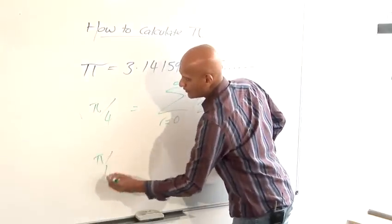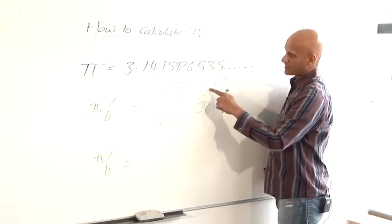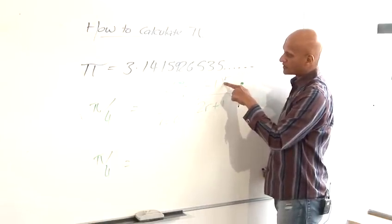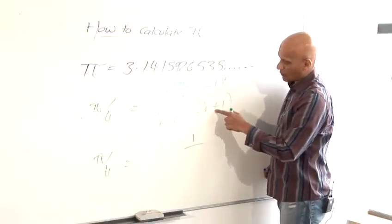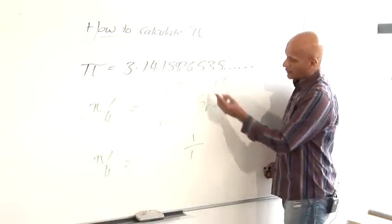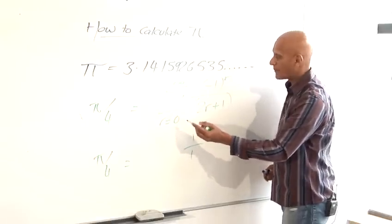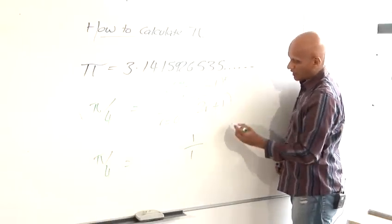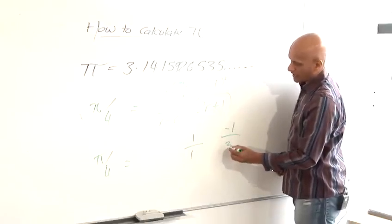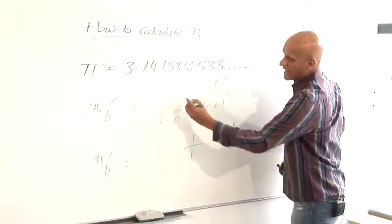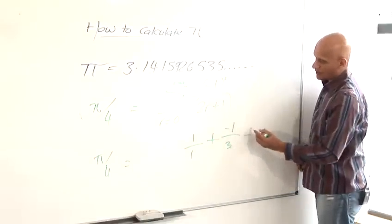We have pi over 4 equals... So first of all, I'm going to put R equals 0 into this. So minus 1 to the power 0 would be 1. Anything to the power 0 is 1. Over 2 lots of 0 plus 1 would be 1. So when you put in 0 into that, that's just 1 over 1. Now I put in the next number. So minus 1 to the 1, which is minus 1, over 2 lots of 1 plus 1 is 3. And the sigma means add. So I put a plus sign in between them.